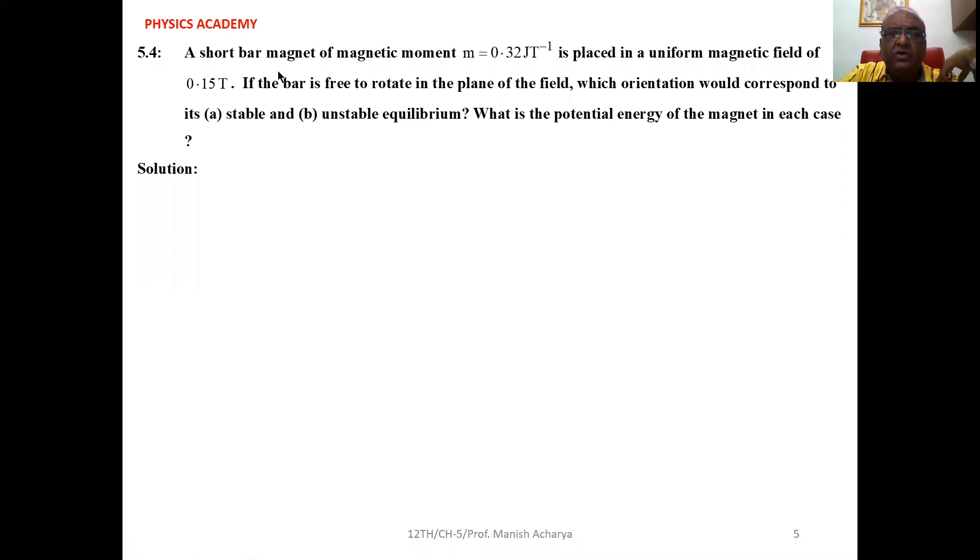Problem 4: A short bar magnet of magnetic moment m = 0.32 joule per tesla is placed in a uniform magnetic field of 0.15 tesla. If the bar is free to rotate in the plane of the field, which orientation would correspond to its stable and unstable equilibrium? What is the potential energy of the magnet in each case?